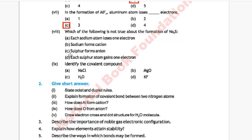Question 8: Which of the following is not true about the formation of Na₂S? Option A: each sodium atom loses 1 electron, Option B: sodium forms a cation, Option C: sulfur forms anions, Option D: each sulfur atom gains 1 electron. The correct answer is Option D — each sulfur atom gains 1 electron is not true about the formation of Na₂S.